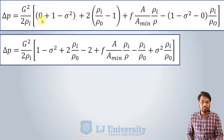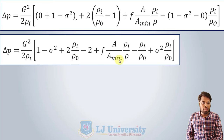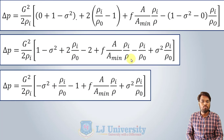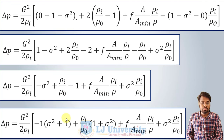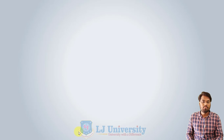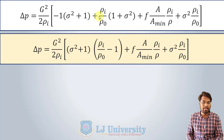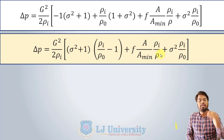Simplifying with Kc = 0 and Ke = 0, opening the brackets we get: 1 − σ² + 2·ρi/ρ − 2 + F·A/A_min · ρi/ρ − ρi/ρ + σ²·ρi/ρo. Combining like terms (2·ρi/ρ minus ρi/ρ gives ρi/ρo; plus 1, minus 2 gives minus 1), then factoring σ² + 1 as common, we obtain the tube fin equation with (σ² + 1)·(ρi/ρo − 1) plus the friction term. This is the proof of how the tube fin heat exchanger equation is derived.